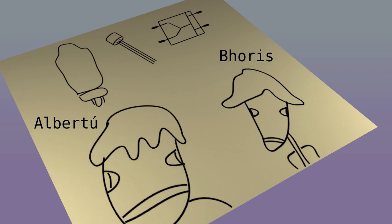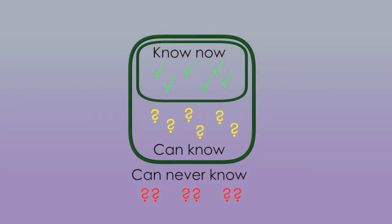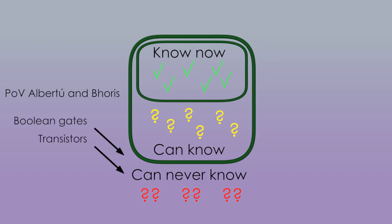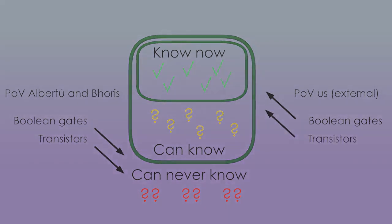Let's go back to our diagram. The Boolean gates and the transistors, where do we put them? Well, from the point of view of Albert II and Boris, they know that there is a low level that behaves as Boolean gates, but they know nothing about them, and they can never tell the difference between vacuum tubes and transistors. On the other hand, from our point of view, both the Boolean gates and the transistors are known facts. We'll return to Albert II and Boris in a bit.